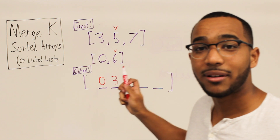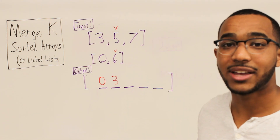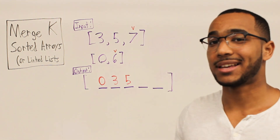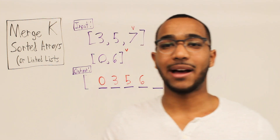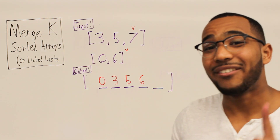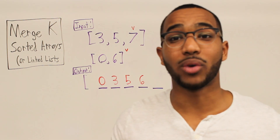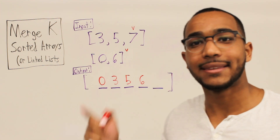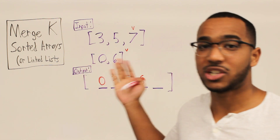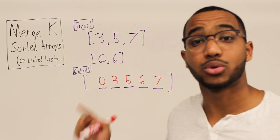There's a reason we do that — we want to compare the least items between these two arrays, because those are the comparisons that matter. Now we compare three and six; three wins, so now we grab five. Five is less than six, so five gets the placement. Now we're comparing six and seven; six gets the placement. We've gone out of bounds on the second array, so we just add the remaining values from the first array. We've merged two sorted arrays.